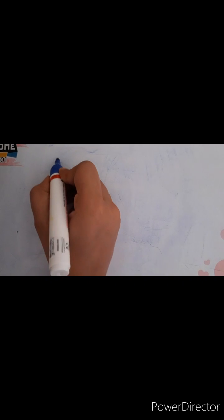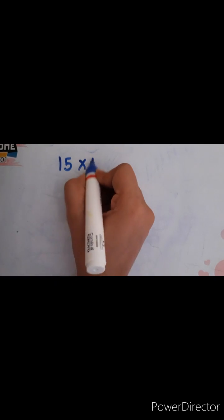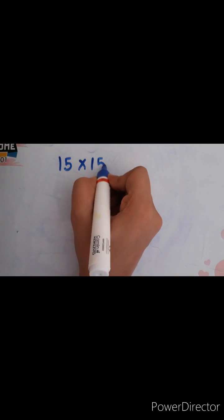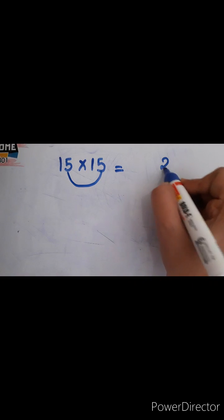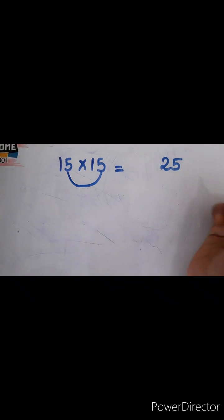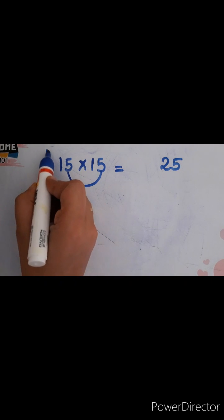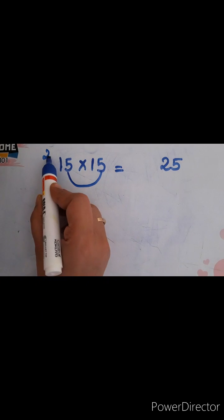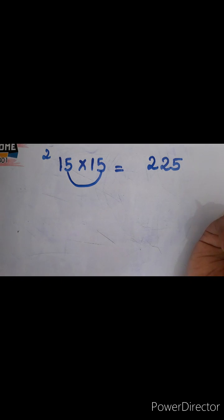Next I am going to multiply 15 into 15. For this you have to multiply 5 fives — that gives you 25. And after this 1, which is the next number? It is 2. 1 twos are 2. So you write here 2 25, making the answer 225.